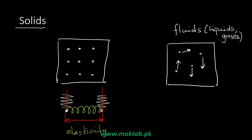This property is called Elasticity. The atomic forces and bonds, like springs, make solids maintain a fixed size and shape. Unlike fluids, which have no fixed size or shape and whose particles move randomly.